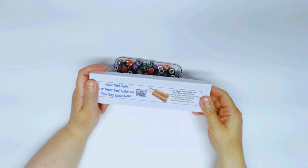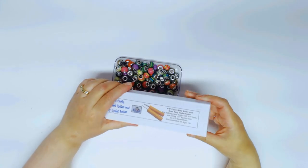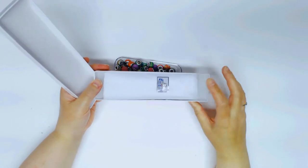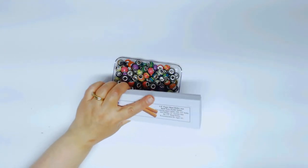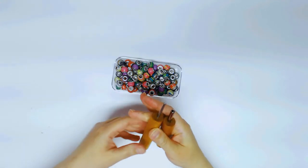I call it a bead easy eyelet setter, but it's a quarter inch paper bead roller and eyelet setter. When you get the package it comes in a pretty box and it's wrapped in tissue paper.